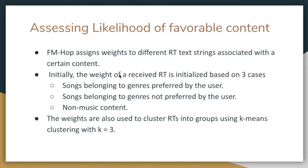Initially, to assess the likelihood of favorable content, FMHOP assigns weights to different radio texts, because when we receive radio texts we can correspond them to music tracks. The weight given to them corresponds to the user's preference. At bootstrap, we ask the user to explicitly mention their genre preferences, and using these preferences we assign weights to radio texts. Music tracks belonging to a genre preferred by the user get the highest weight, while tracks belonging to a non-preferred genre get a slightly lower weight.